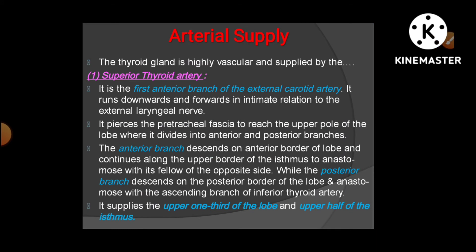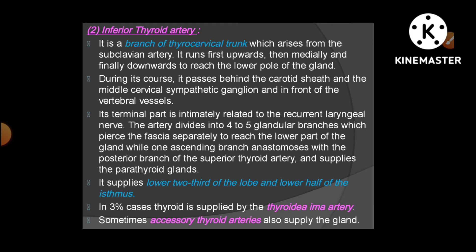The anterior branch of the superior thyroid artery descends on the anterior border of the lobe, then continues along the upper border of the isthmus and anastomoses with the opposite anterior branch. The posterior branch descends on the posterior border and anastomoses with the inferior thyroid artery from below. The superior thyroid artery supplies the upper one-third of the lobe and the upper half of the isthmus.